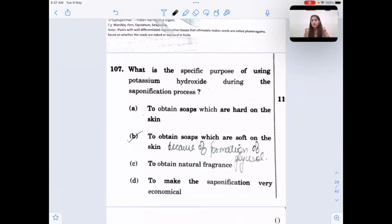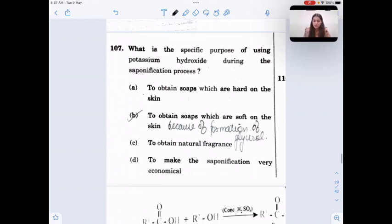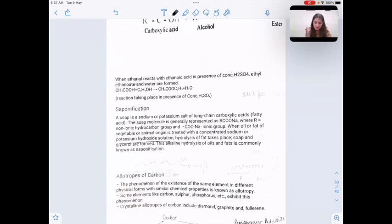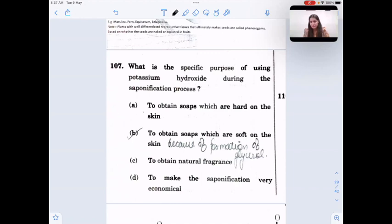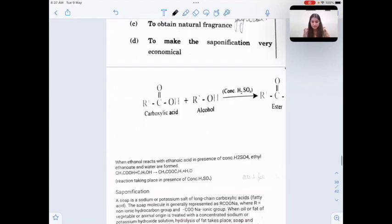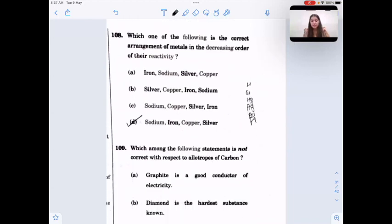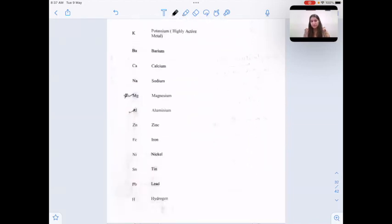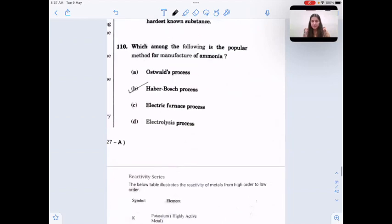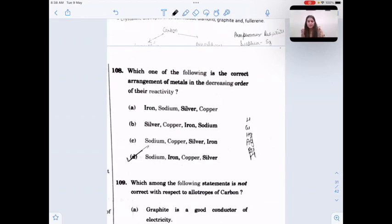What is the specific purpose of using potassium hydroxide during saponification reaction? During saponification reaction, potassium hydroxide solution is used or sodium hydroxide solution is used. The eventual product is glycerol and soap. The glycerol which is formed retains moisture of the skin. So option B: to obtain soaps which are soft on the skin. Which of the following is correct arrangement in decreasing order of reactivity? From reactivity series, the correct sequence is sodium most reactive, followed by iron, then copper and last one is silver.